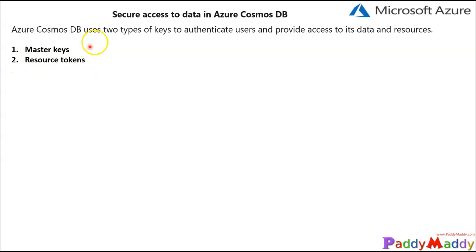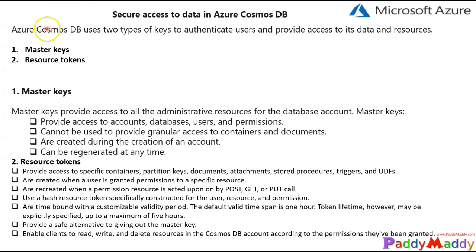Master keys are used for administrative resources such as creating and editing database accounts, databases, users, or permissions. Master keys cannot be used for providing granular access to containers or documents. A master key is created by default when you create a Cosmos DB account and can be regenerated at any time.